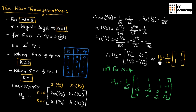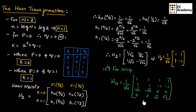Taking 1/√2 as common, we get H2 equals (1/√2) × [[1, 1], [1, −1]]. This is the Haar matrix for n equals 2. For n equals 4, performing the same calculations yields the corresponding 4×4 Haar matrix. This concludes the explanation of Haar transformation.